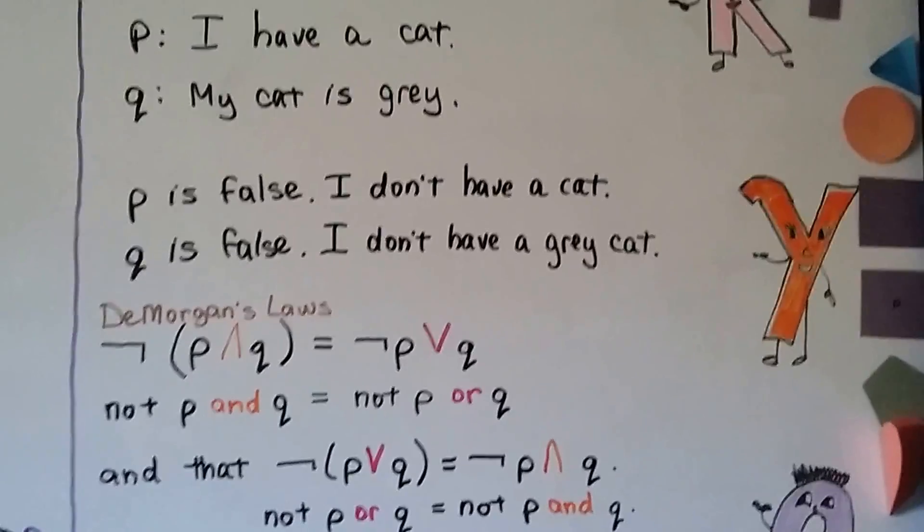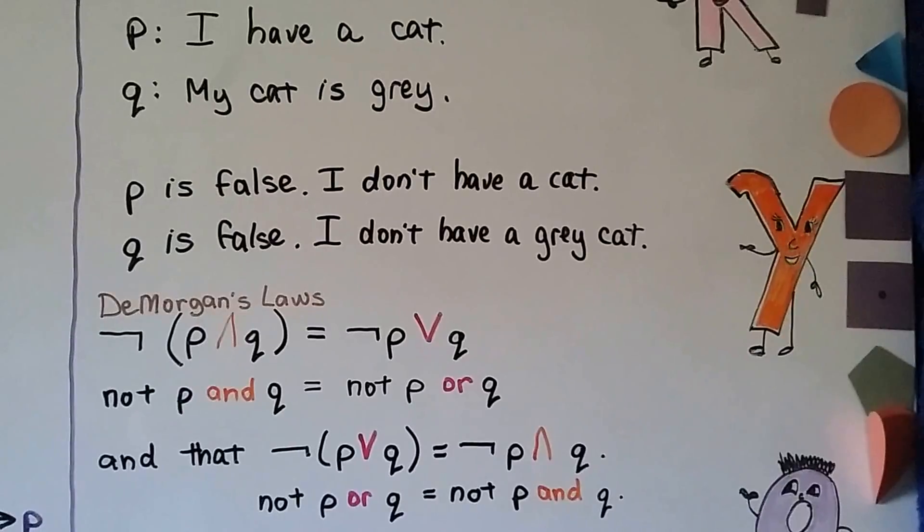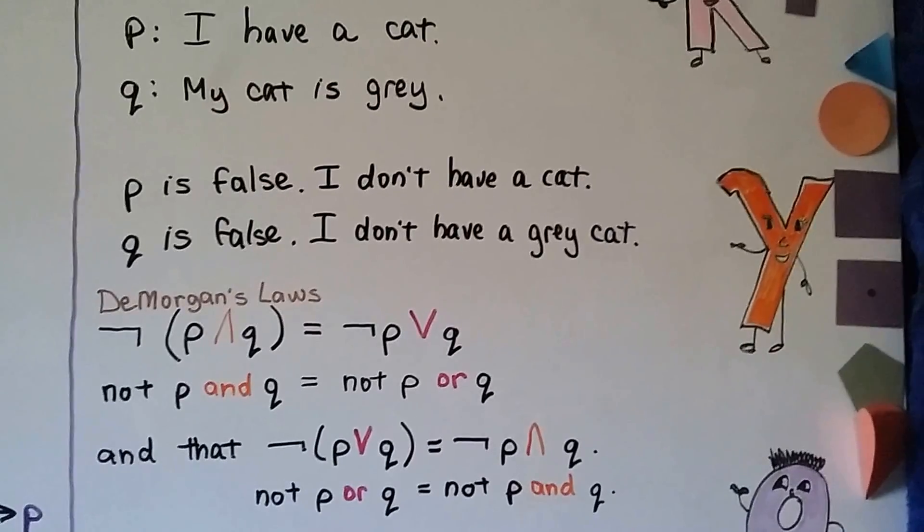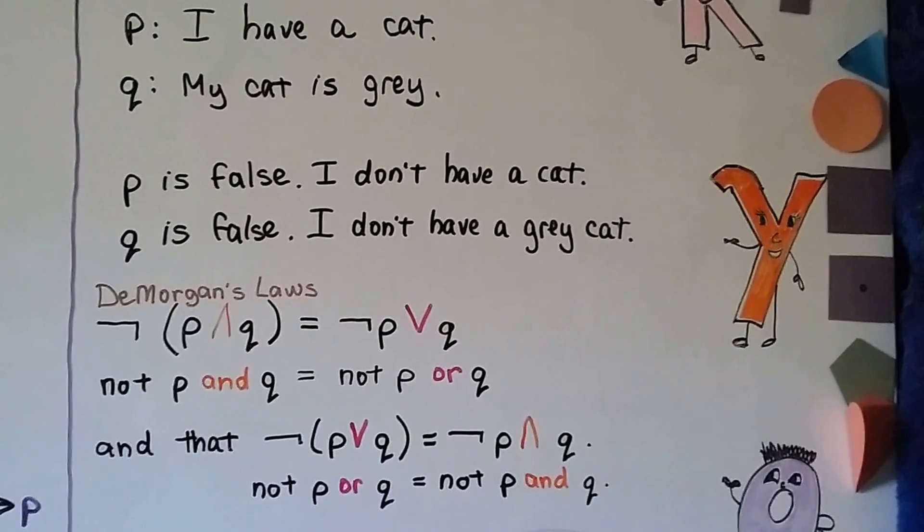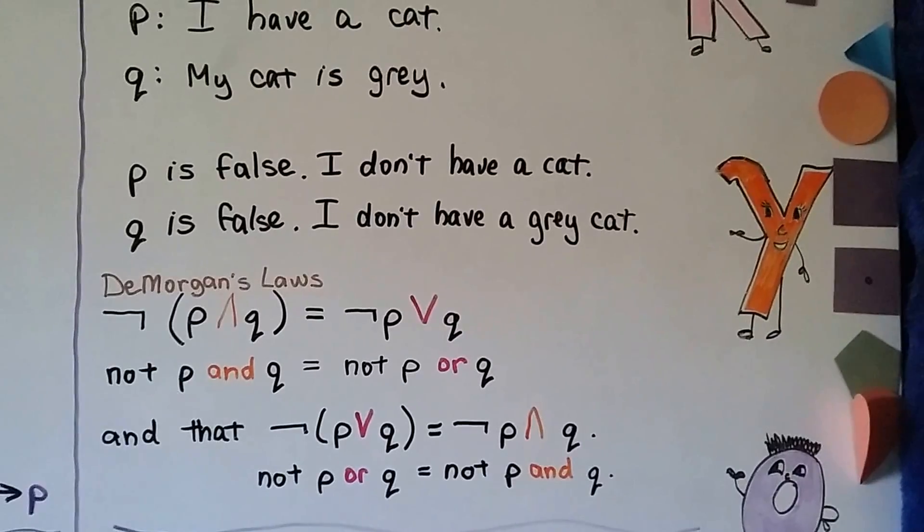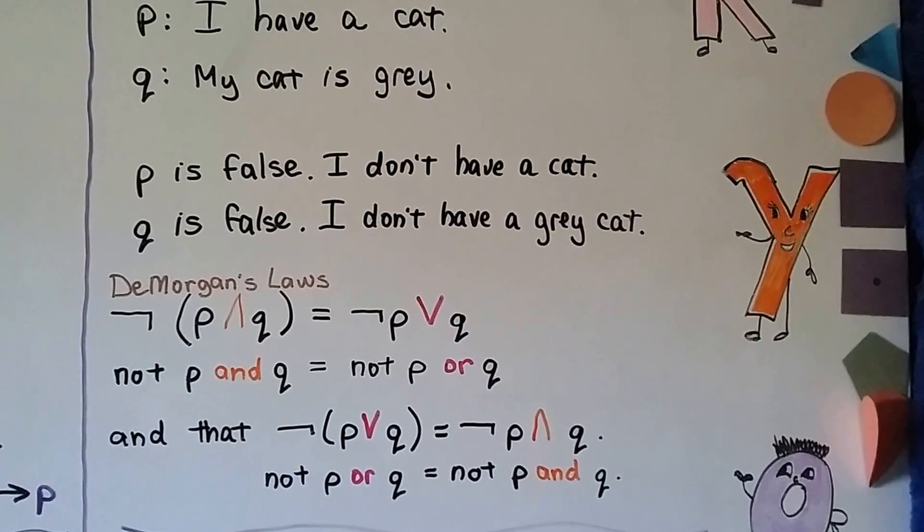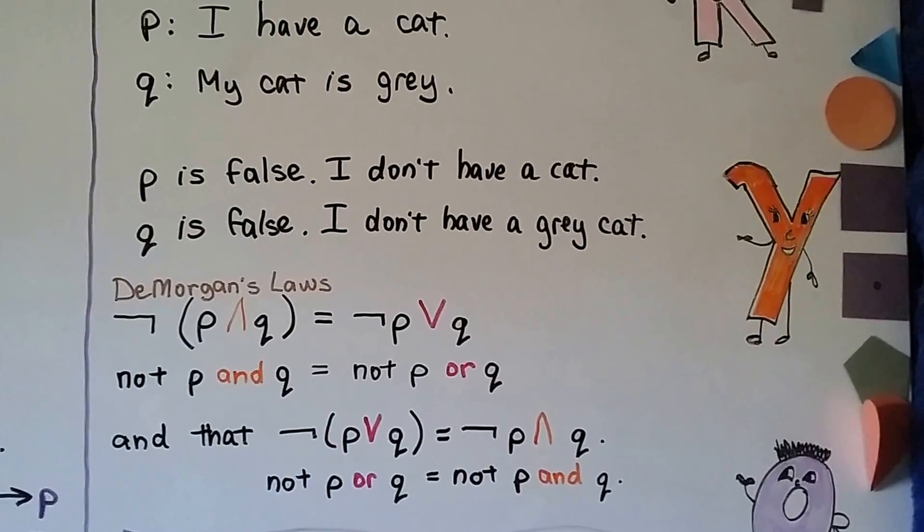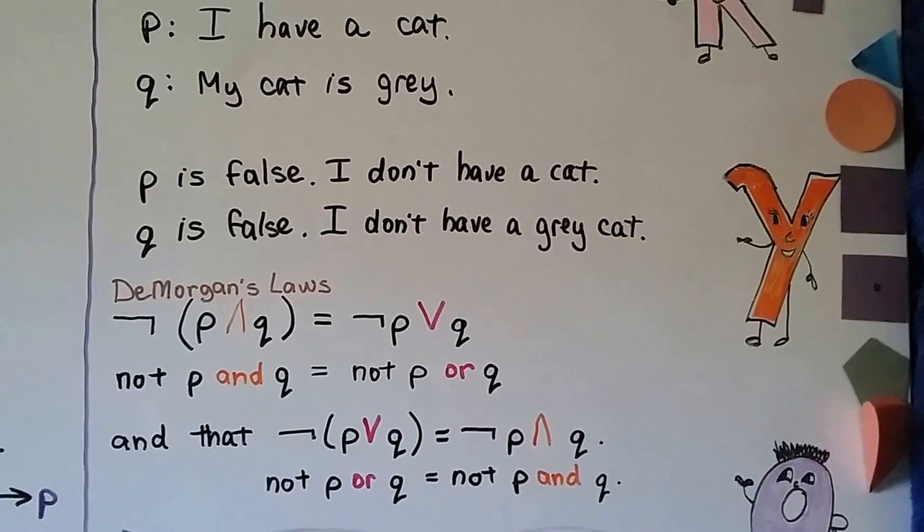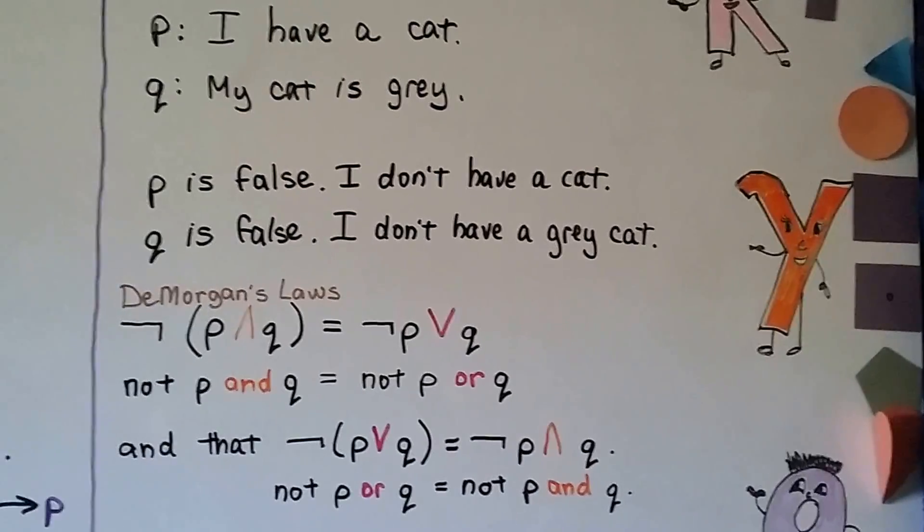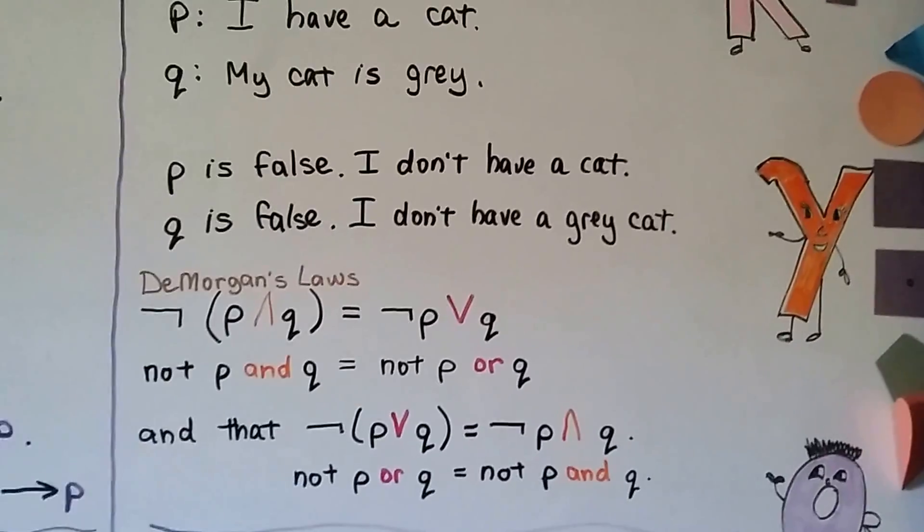So De Morgan's Law says if it's NOT P AND Q, then it's NOT P OR Q. Then I don't have a cat or I don't have a cat that's gray. And that NOT P OR Q is equal to NOT P AND Q. So if I don't have a cat or a gray cat, then it's NOT P AND Q. It's not either of them. So that's De Morgan's Laws.